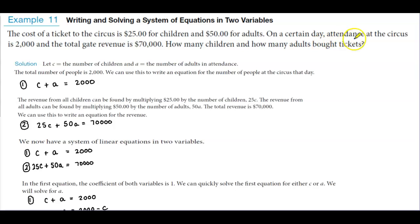On a certain day, attendance at the circus is 2,000 and the total gate revenue is $70,000. How many children and how many adults bought tickets?